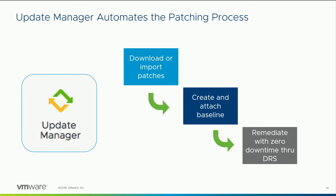Update Manager is part of the VCSA now. It can download patches right from VMware — by default that's what it's going to do. It downloads the metadata, and then depending on what you need to do with it, it'll download the patches on demand. If you're in an air-gap environment where your vCenter server doesn't have access to the internet, we have something called Update Manager Download Service — UMDS — which acts as a proxy that can communicate with VMware.com, download the patches, and you can expose them over HTTP or through copying to your local environment.